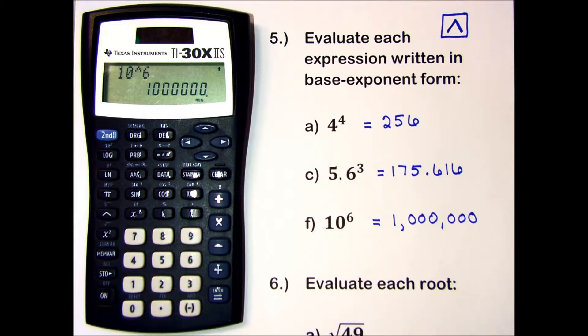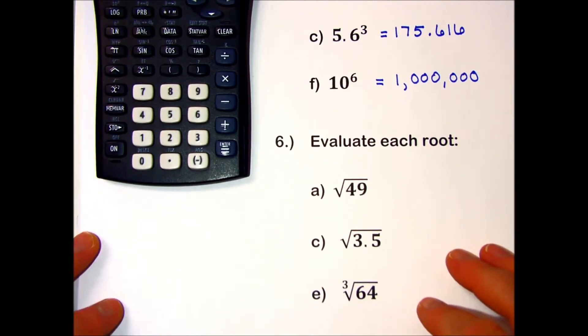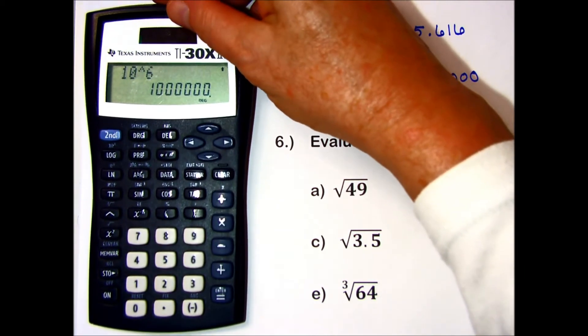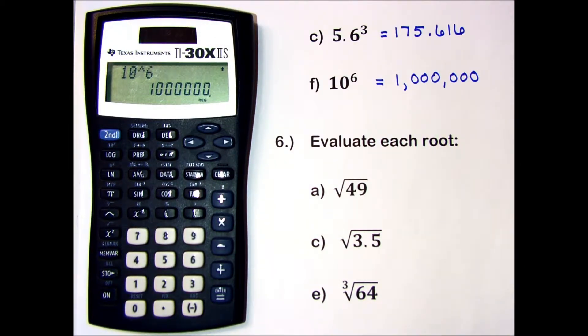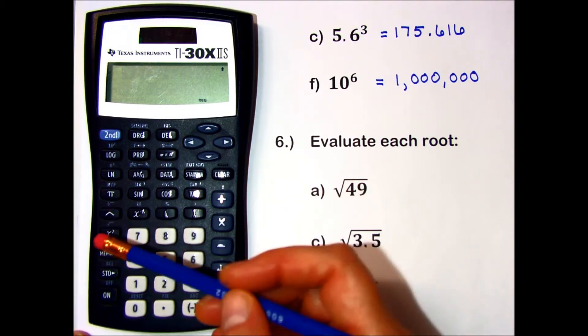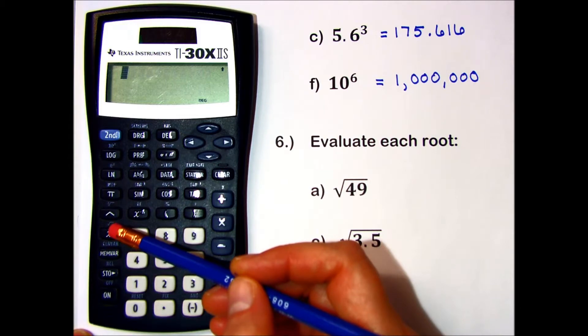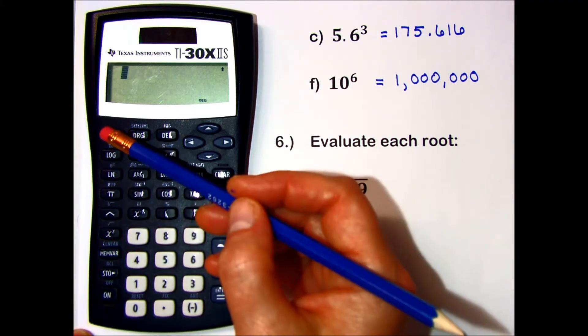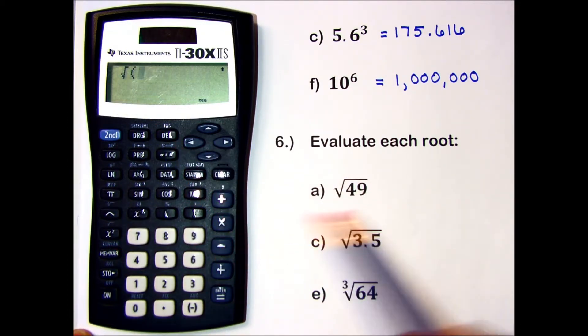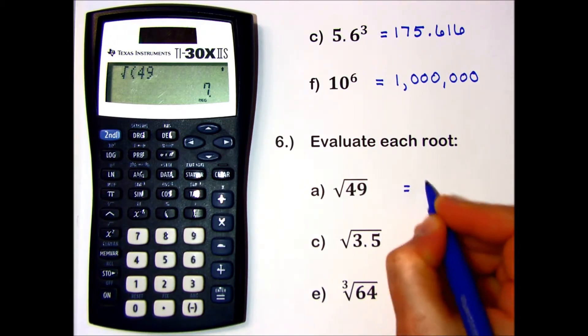Let's look now at evaluating some roots in problem number 6. The square root of 49 can be found using a square root button. It's a second function of the x squared button, written in blue just above your x squared button. I access it with the second key. Second, root, square root of 49, press enter, and my number is 7.